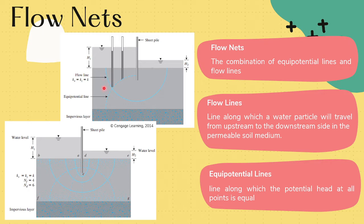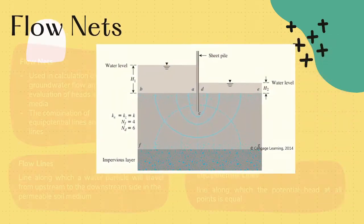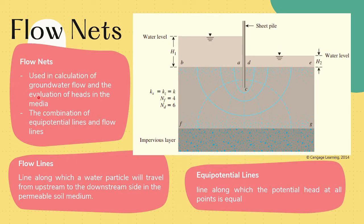Suppose that we have finished drawing all the equipotential and flow lines. They will form a mesh. The combination of the equipotential and flow lines is what we call the flow net. Flow nets are used in the calculation of groundwater flow and the evaluation of heads in the media.